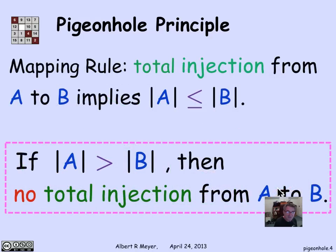But let's remember that this is actually just an informal way of saying something that we've formally seen already. One of the mapping rules is that if you have a total injection from a set A to a set B, that implies that the size of A is less than or equal to the size of B.